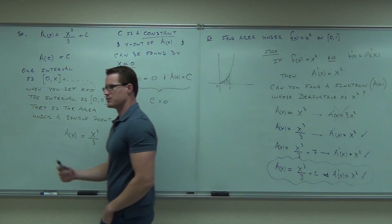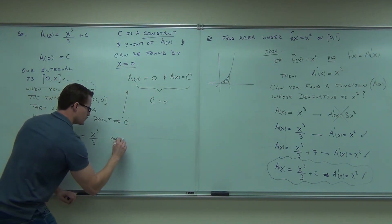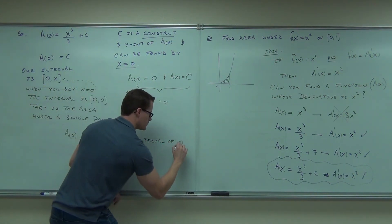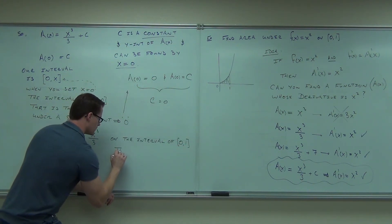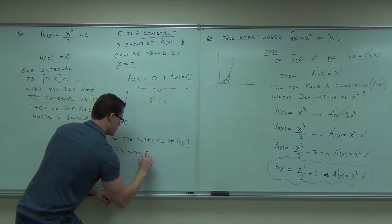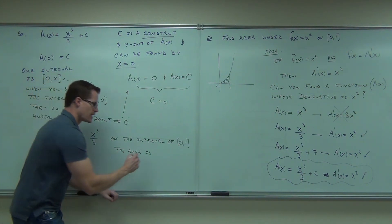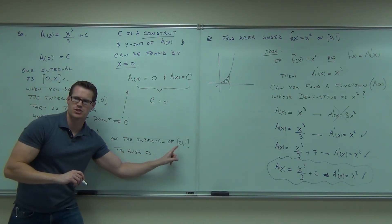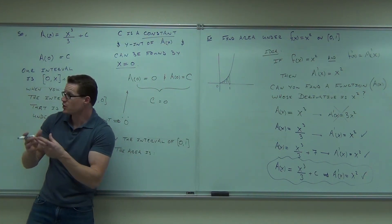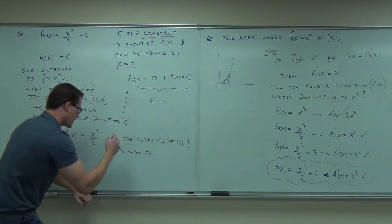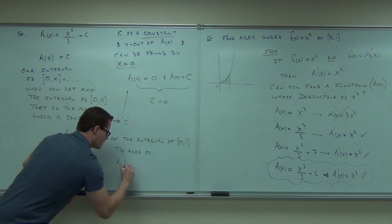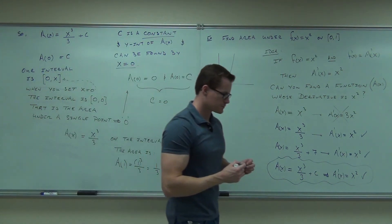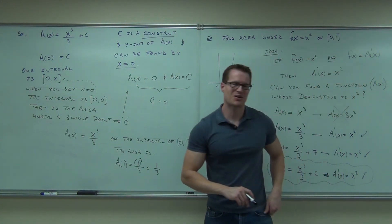Now you can plug numbers in. On the interval from zero to one, what is x at the stopping point? One. So plug in x = 1: A(1) = 1³/3 = 1/3. The area under x squared from zero to one is one-third square units.